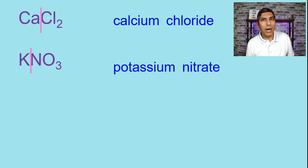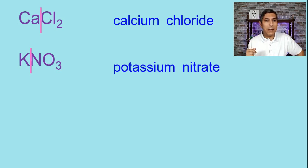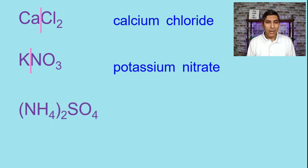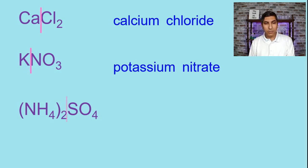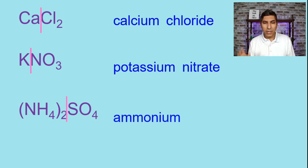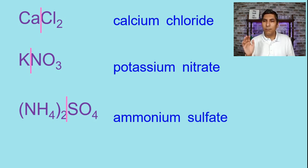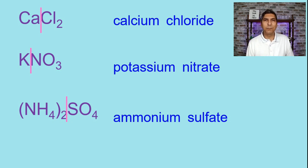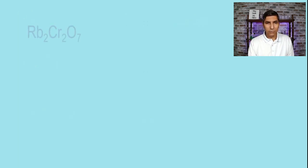If you need a copy of the ion chart to see or learn those polyatomic ions, I have a PDF ion chart in the description below. The next one is (NH4)2SO4. Split this in half — NH4 is called ammonium, right off of the ion chart. And SO4 is a polyatomic ion called sulfate. So we have ammonium sulfate. If you know the names of the ions, it's pretty simple to name ionic compounds.